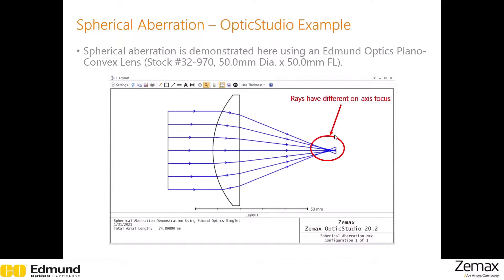This is an Optics Studio demonstration of spherical aberration. We used an Edmund Optics plano-convex lens operating at a low F number. As you can see, the rays focus differently on the axis, and the highest amount of ray bending is seen from the ray that strikes the lens at the highest angle. This is the outermost ray.